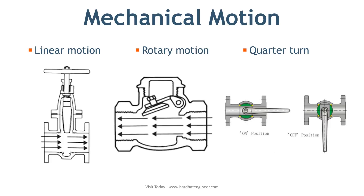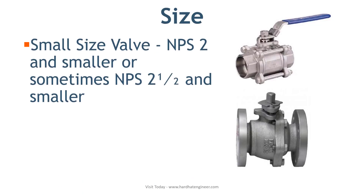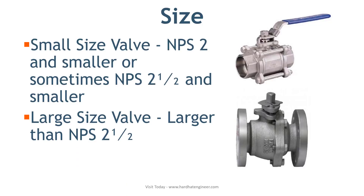Classification based on size. Valve size is defined by the nominal pipe size, which is equal to the size of the valve connecting end or flange end size. The valve size is not necessarily equal to the inside diameter of the valve — a 6-inch valve does not necessarily have a 6-inch opening. Based on size, valves are grouped as small size and large size. Normally, NPS 2 and smaller, or sometimes NPS 2.5 and smaller, are considered small size valves. This sizing classification can vary from company to company. Valves larger than NPS 2.5 inches are generally classified as large size valves.